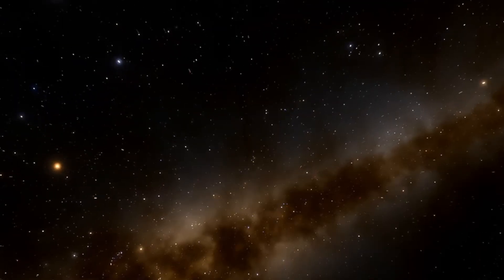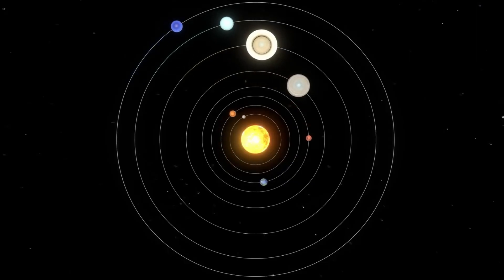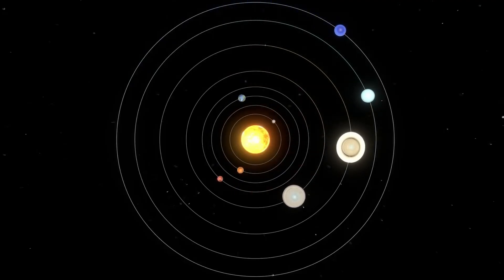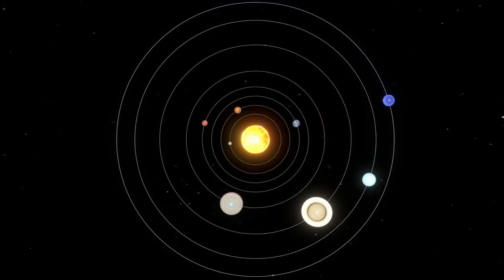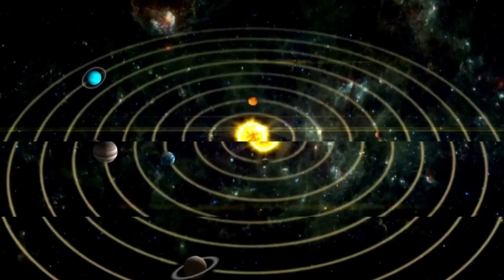For decades, we've been fed the same simplistic model of our solar system - eight neat planets circling the sun on what looks like a cosmic vinyl record. But this tidy illustration isn't just misleading, it's a fundamental distortion that obscures the true nature of our cosmic neighborhood.